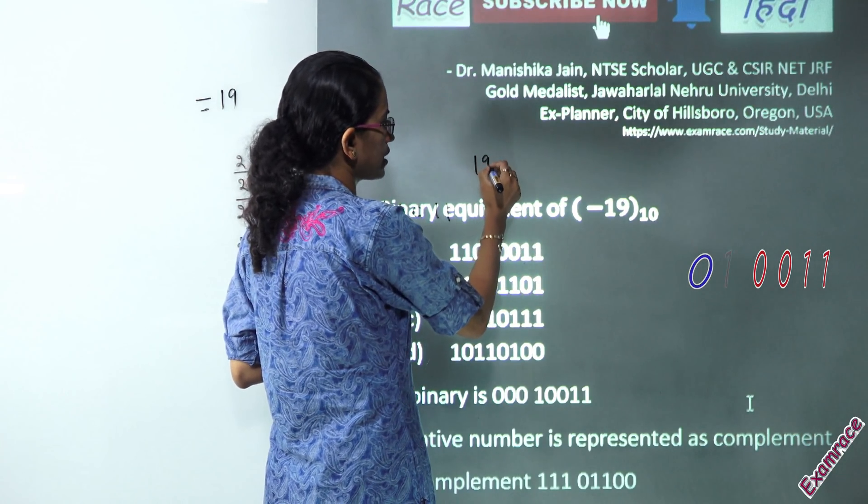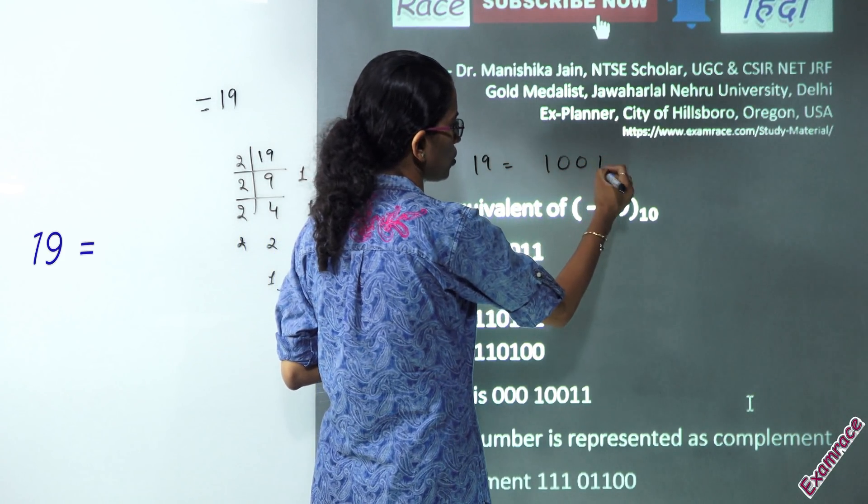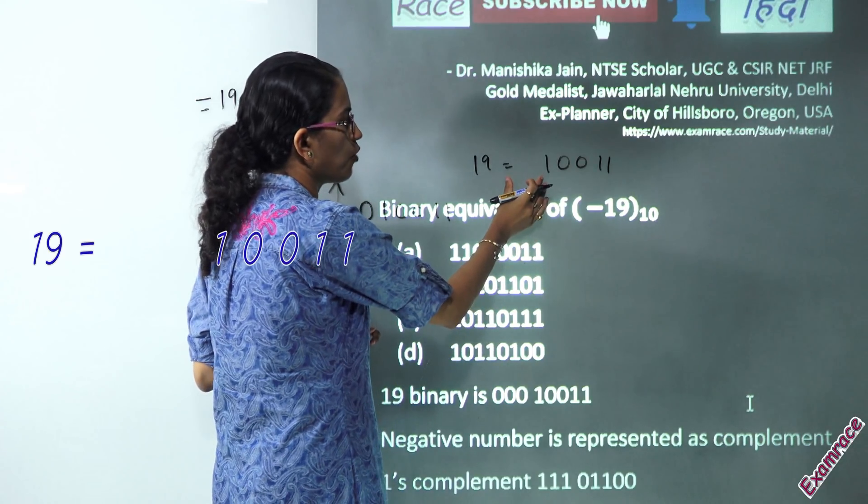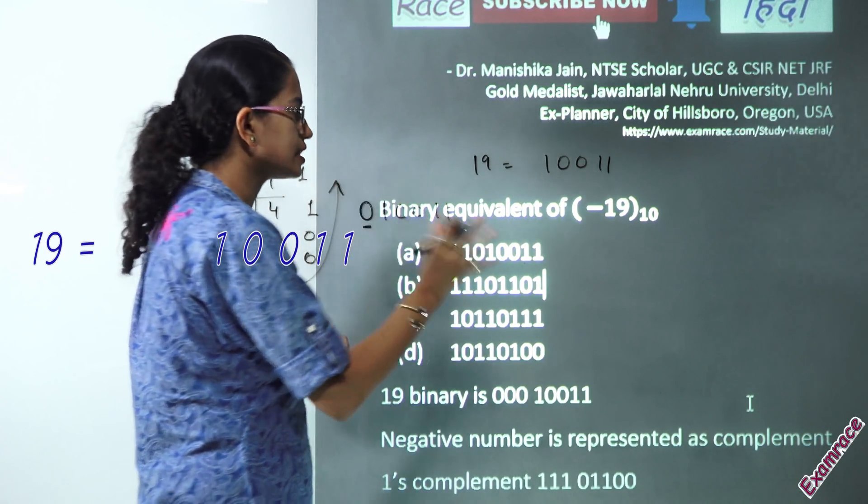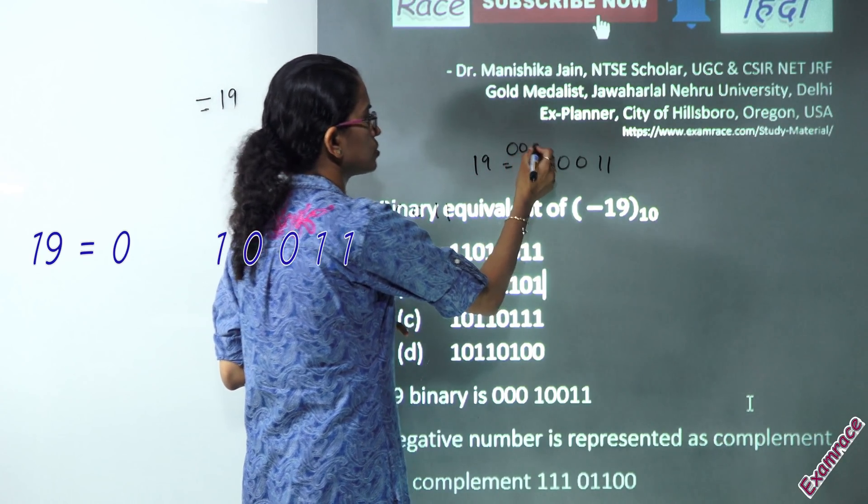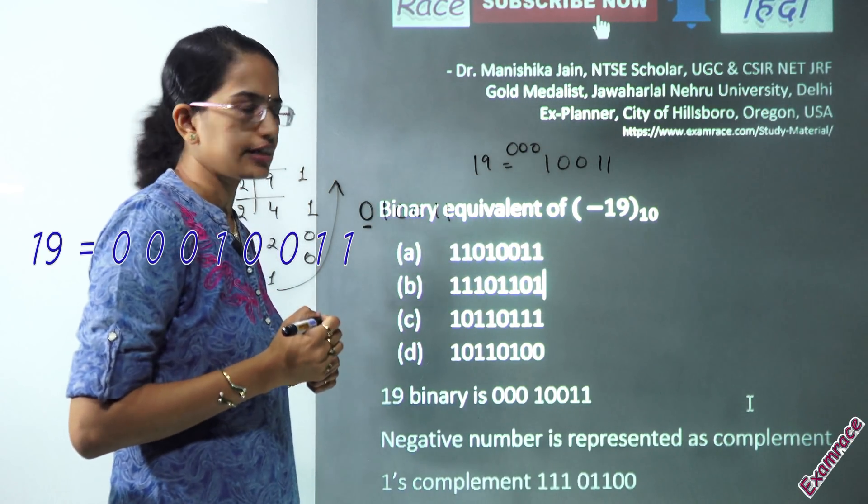Now, my binary equivalent for 19 is 1, 0, 0, 1, 1. But, before that, how many 0s I'll have to place? I'll have to place 3 0s. And these 3 0s are basically signifying the negative sign.